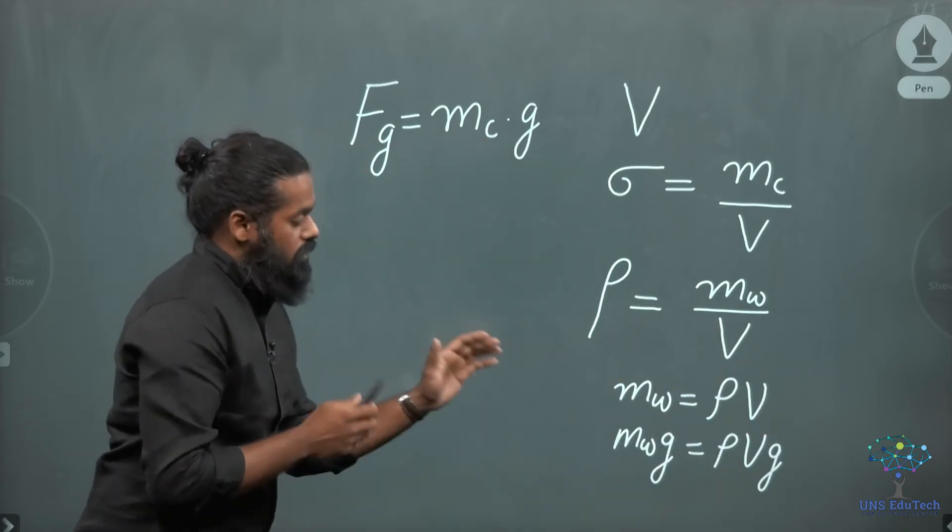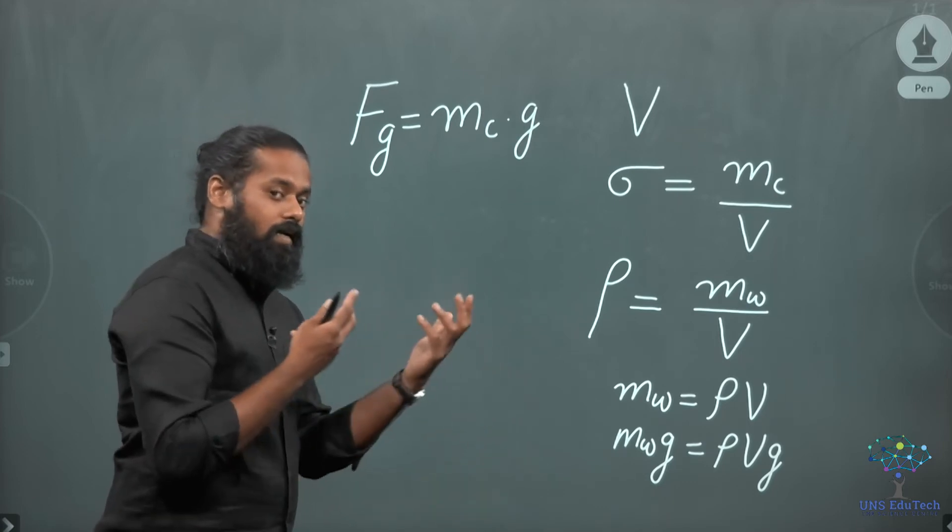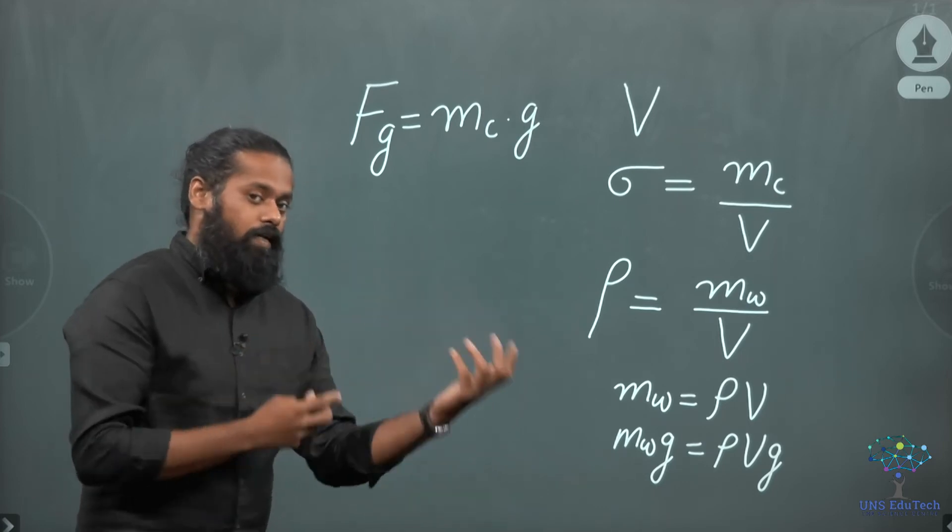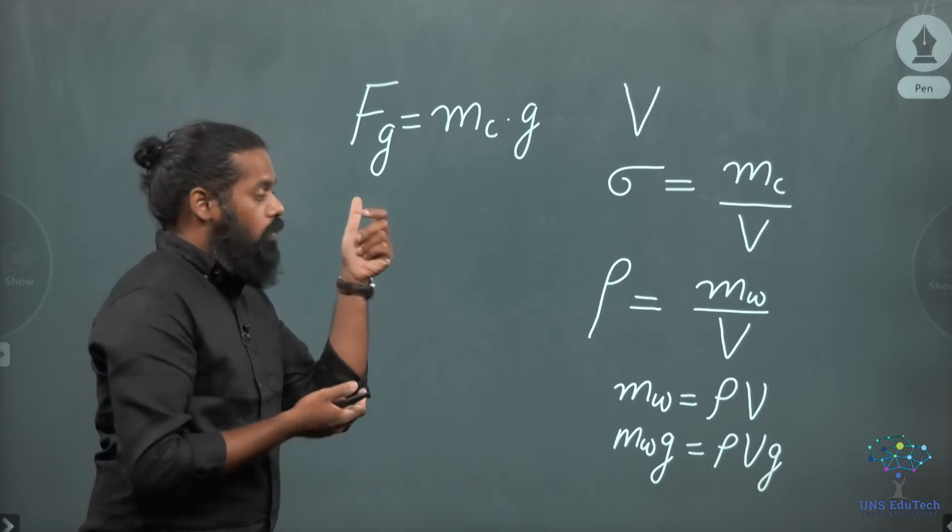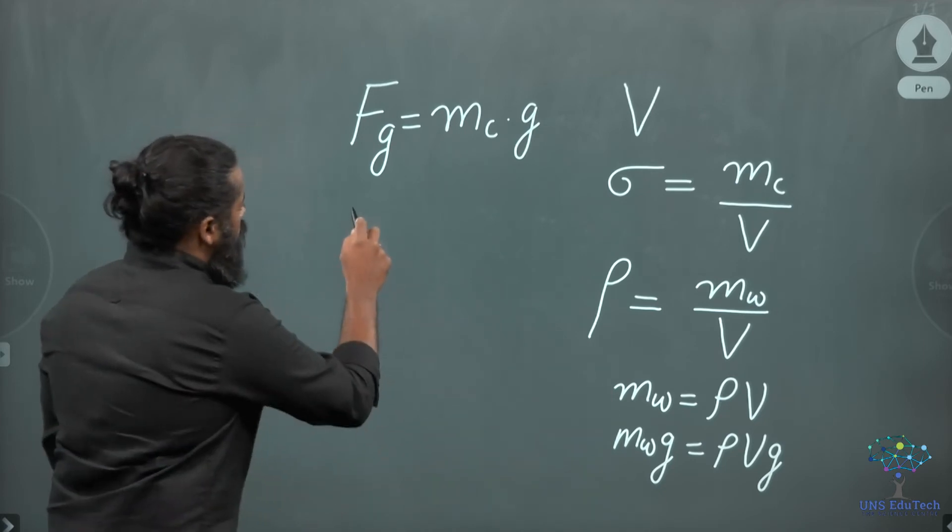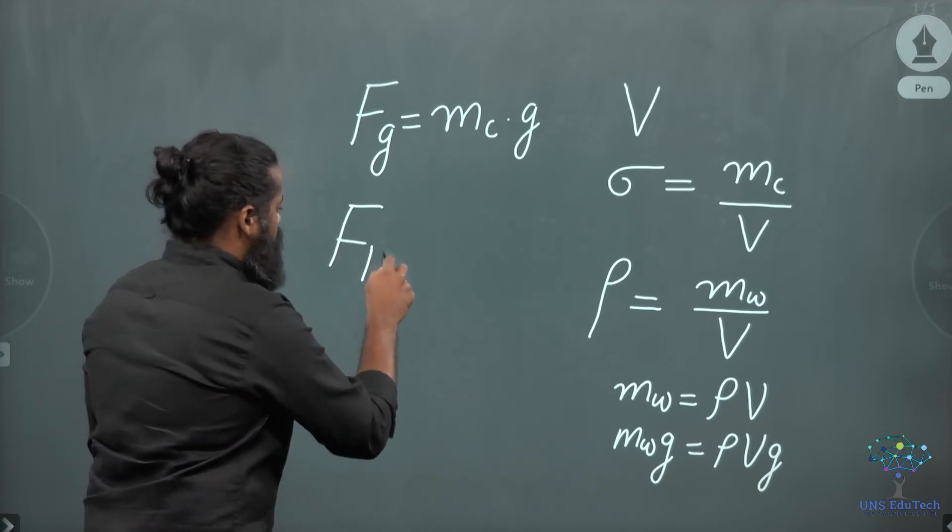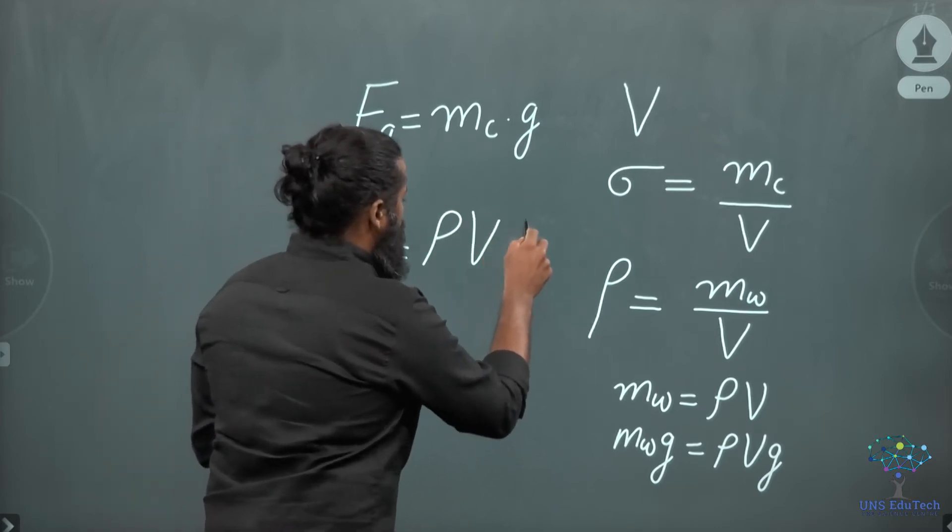Here, this is called buoyancy force, or this is exactly the weight of the liquid displaced. And Archimedes principle says that the weight of the liquid displaced will be equal to the buoyancy force, or the weight reduction happened will be equal to this quantity. So we can call it buoyancy force, FB will be equal to rho into V into G.